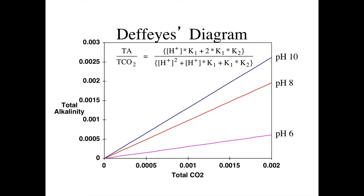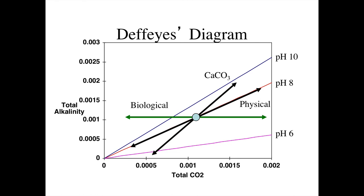Now I'm going to superimpose chemical, biological, and physical processes onto this diagram. I'll assume we measured a sample of water with a total CO2 of just over 1 millimolar and an alkalinity of just over 1 millimolar — that's our starting point in the center of the defase diagram. We can now think about how the pH will change if we modify the system through chemical addition of calcium carbonate, physical changes such as evaporation and precipitation, or biological changes.